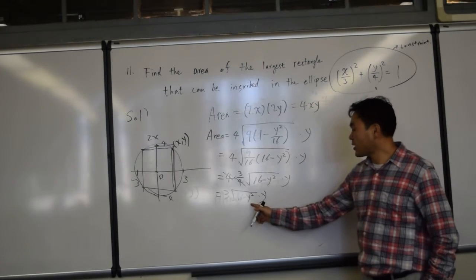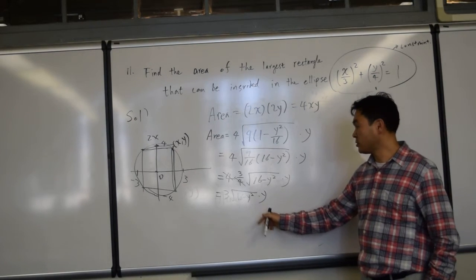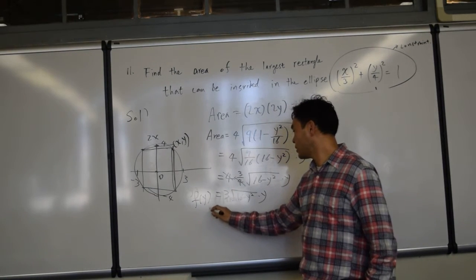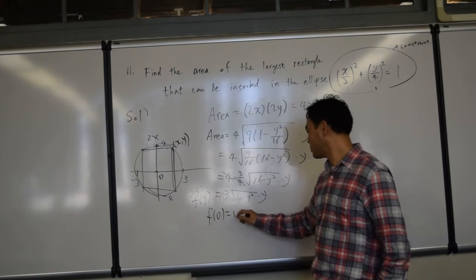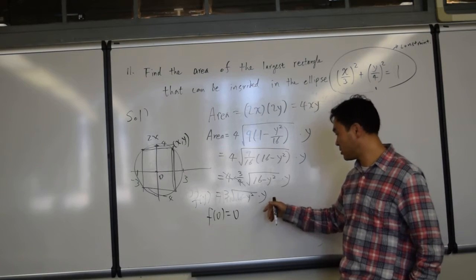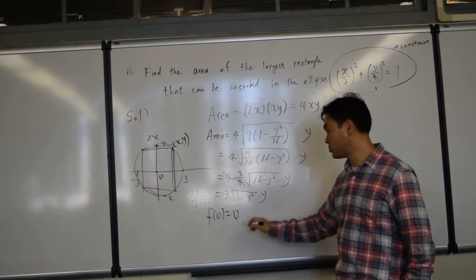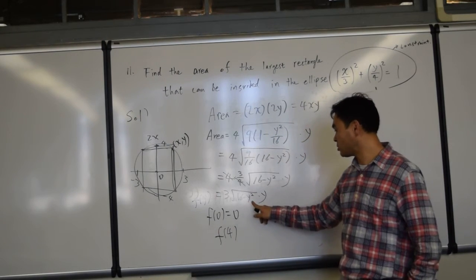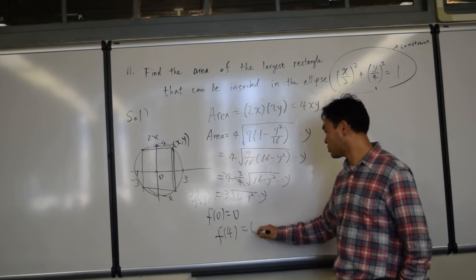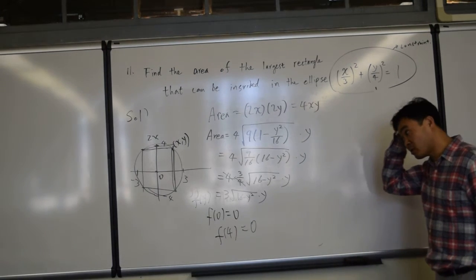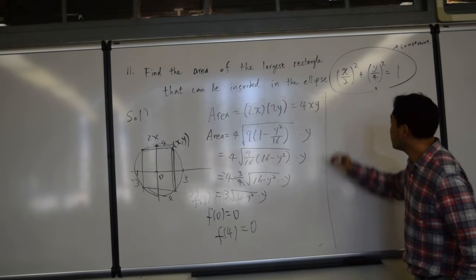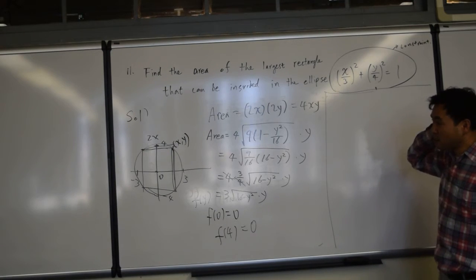Alright, so we're trying to find the maximum and minimum value for this. Let's just call this as f of y. Now, f of 0 is 0, because if y is 0, then it's 0. Anything times 0 is 0. f of 4, if you plug in there, 16 minus 4 squared, that's 0. So in both cases, we know it's 0.